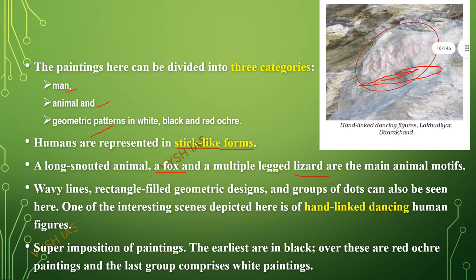Geometric patterns include wavy lines, rectangle-filled geometric designs, and groups of dots. A particularly interesting motif is the hand-linked dancing figures, found at Lakudiyar in Uttarakhand and replicated at many other prehistoric painting sites. There is also superimposition of paintings — one layer painted over another. For example, first painted in black, then red over that, and finally white on top, making it visible. You can see this in the pictures, where white is painted in the background and red is painted on top.